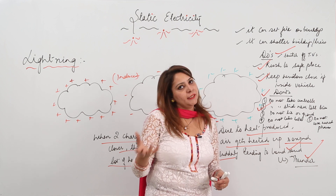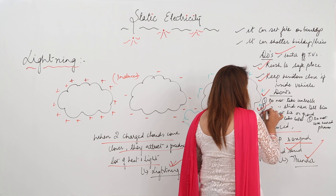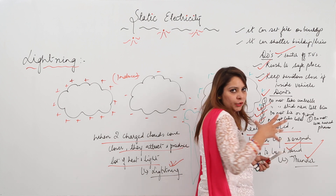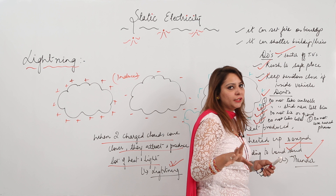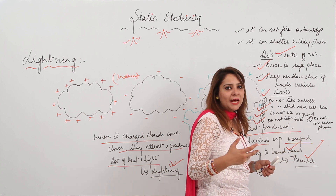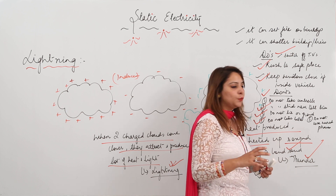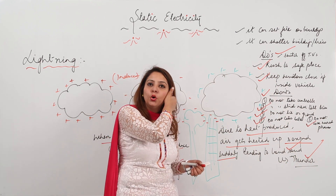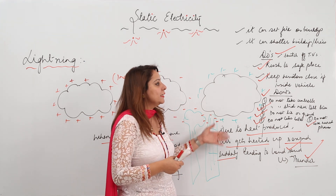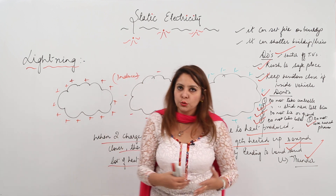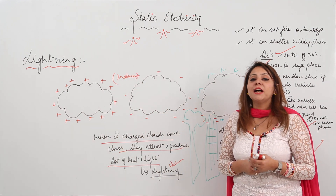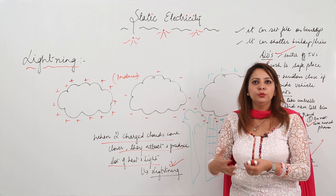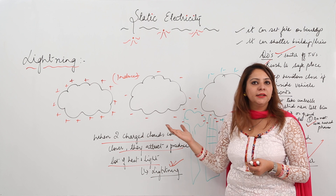Do not lie on the ground. Do not take a bath during a thunderstorm. Avoid contact with running water because the water we get at home is not distilled — it has minerals and is a good conductor. Do not use wired phones as they have conductors which can be dangerous. Now we will start with the lightning conductor, which is installed in tall buildings to protect them from thunderstorms.